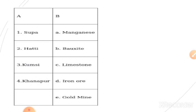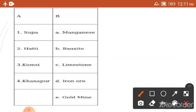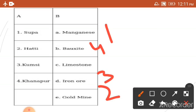There is also a match-the-following exercise. Supa matches with manganese. Hatti is famous for gold. Kumshi matches with iron ore. Kanapur is famous for bauxite. In this lesson, we learned about four different types of minerals and their distribution in Karnataka. Remaining one-mark, two-mark, and three-mark questions will be given in your notes. Thank you.